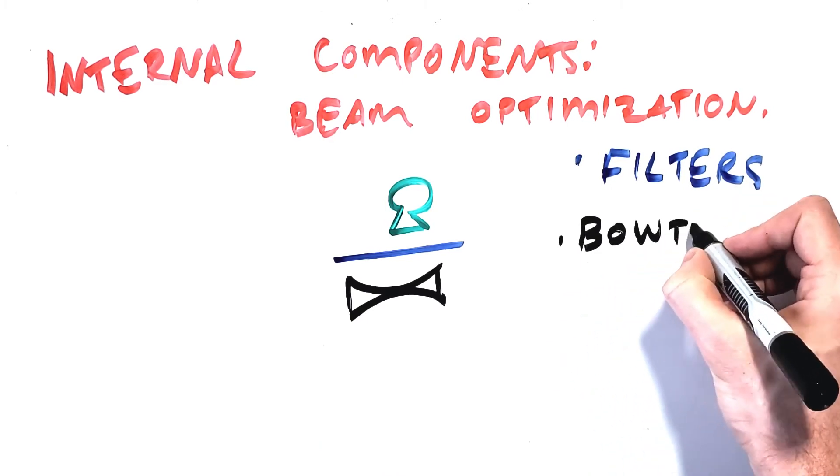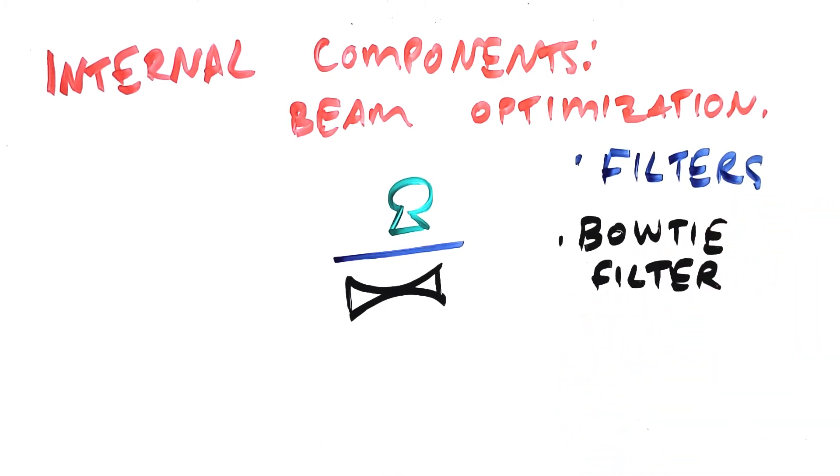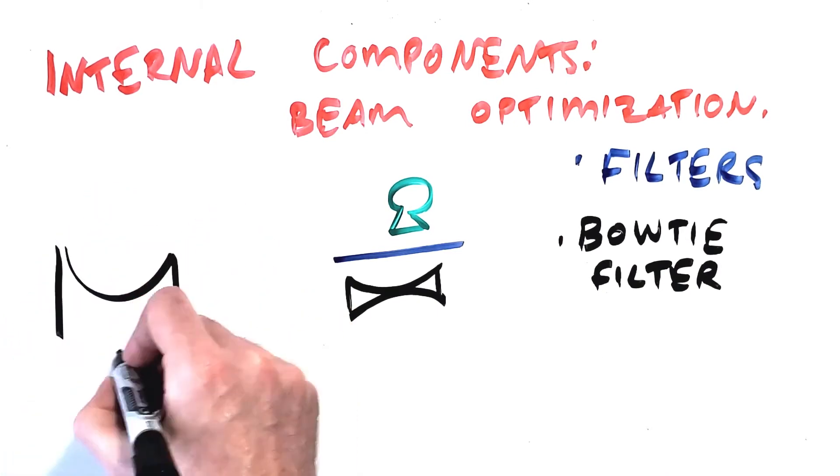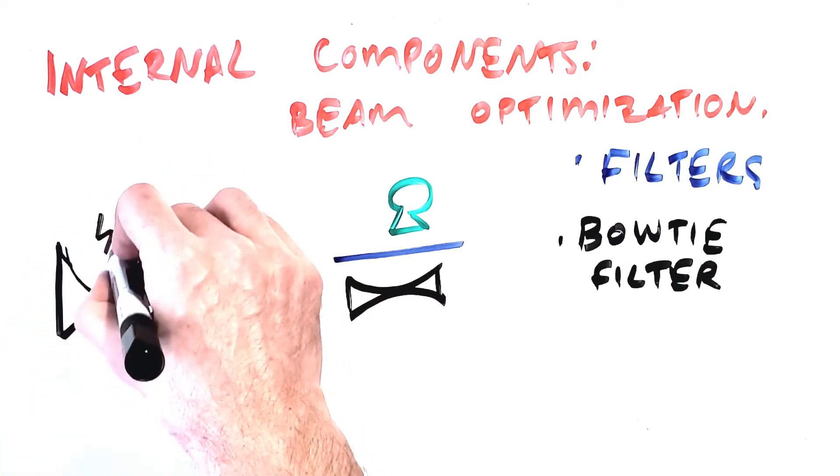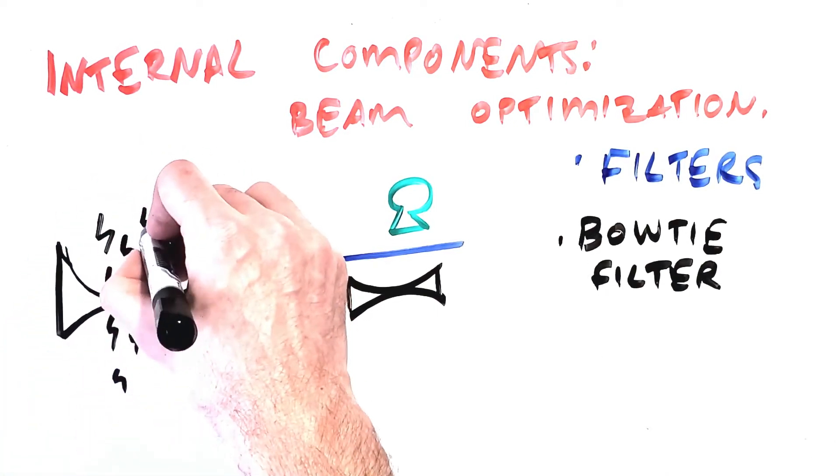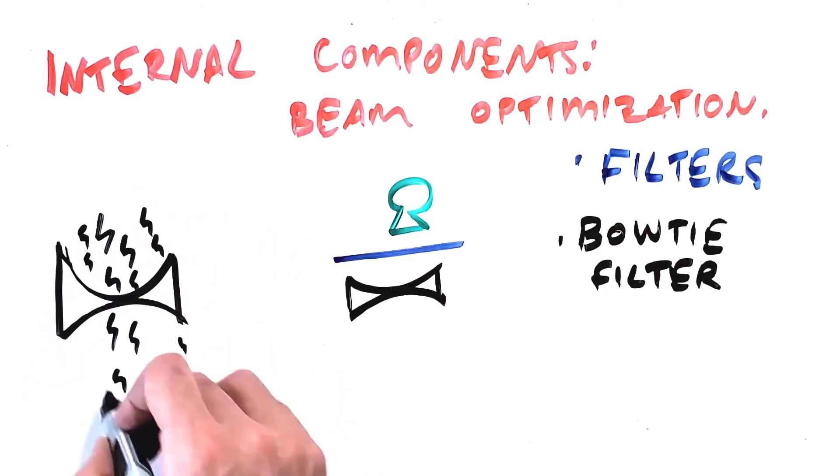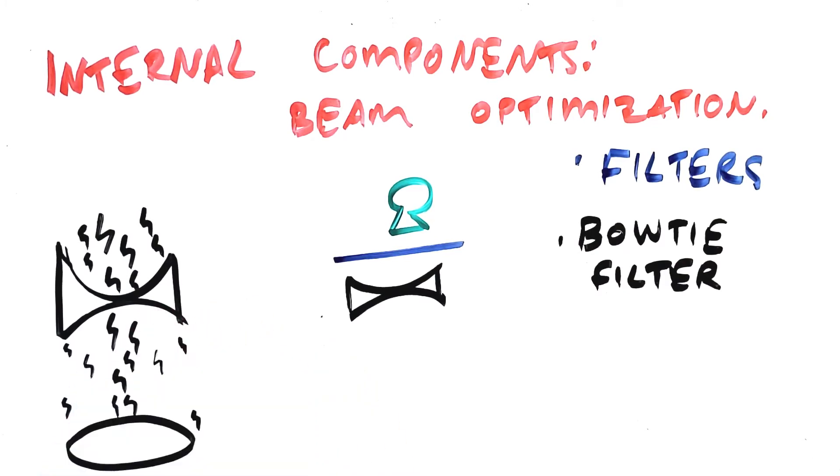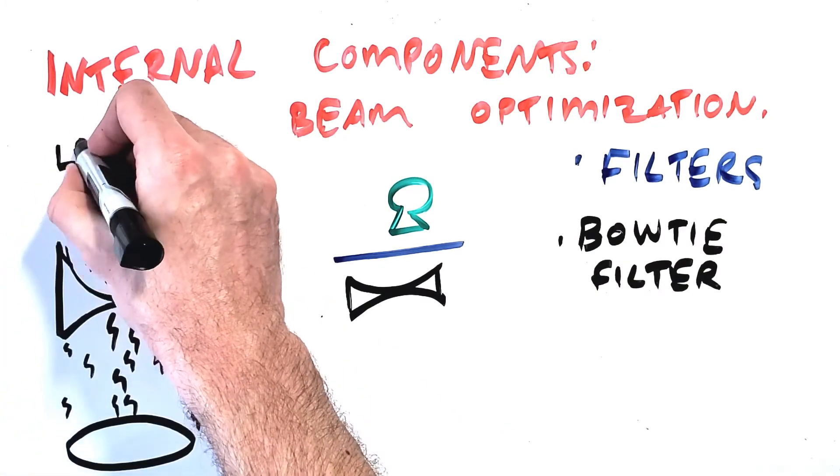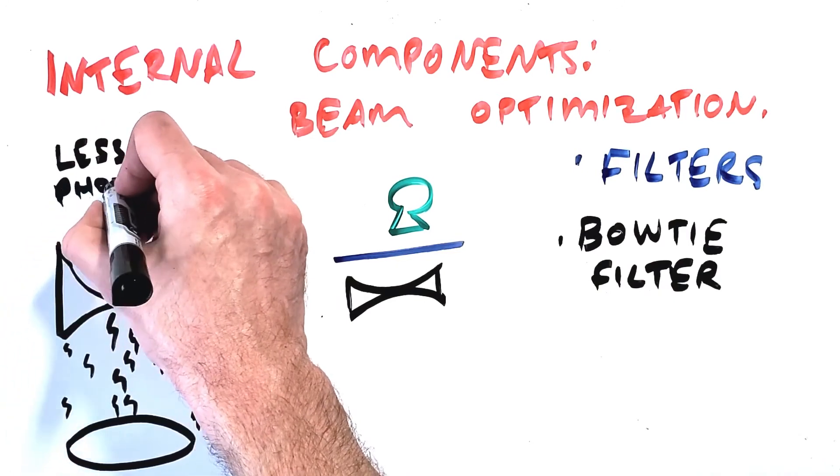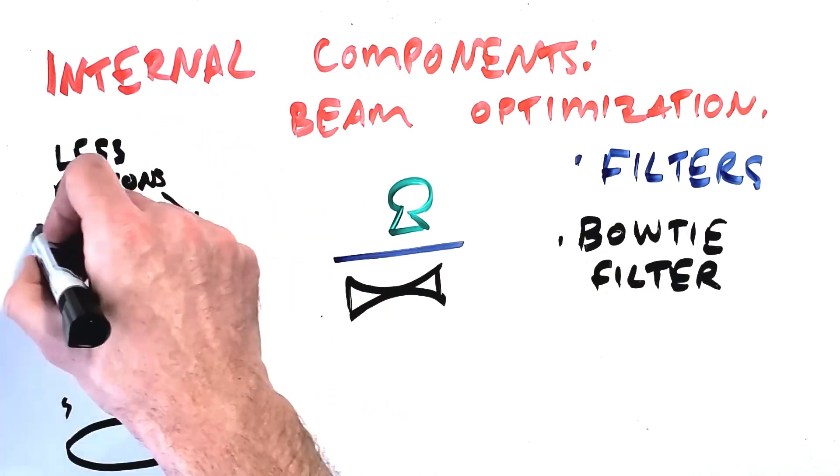And one type of filter unique to CT is the bowtie filter which is shaped like a bowtie so it's narrow in the middle and thicker at the edges. This serves to remove a higher number of photons at the edge of the patient where less photons are needed while allowing a higher number of photons to pass through the center of the patient where the additional beam penetration is required. This leads to a more homogeneous beam exiting the patient while reducing unnecessary radiation dose to the patient's periphery.